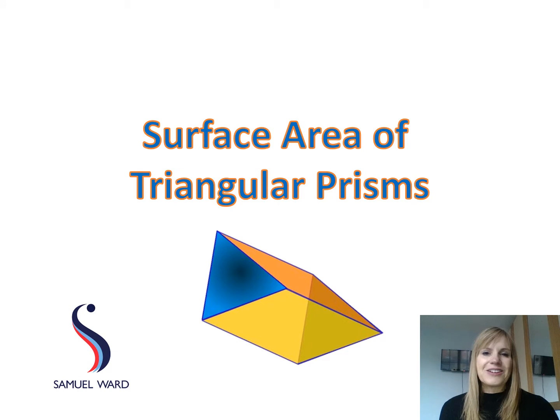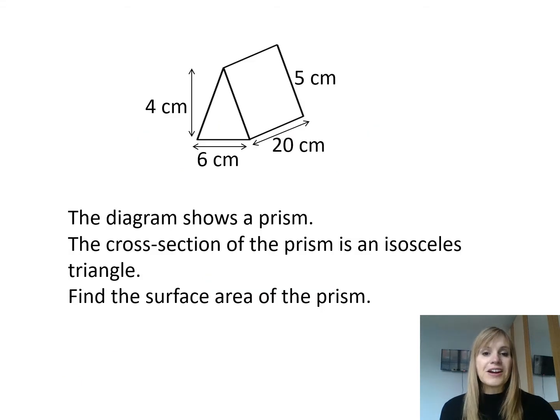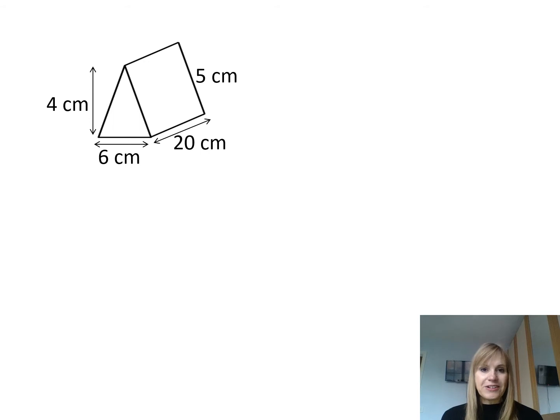So now let's find the surface area. Here's a diagram of a prism. The cross-section of the prism is an isosceles triangle and we've got to find the surface area. Now a prism is just a generic name for any three-dimensional shape in which you can slice it and all the slices will be the same shape. So in this case all the slices would look like triangles. To help me find the surface area of this shape I'm going to draw a net, but before I do that I'm just going to add a couple more lines to my diagram so I can see what all the faces look like.